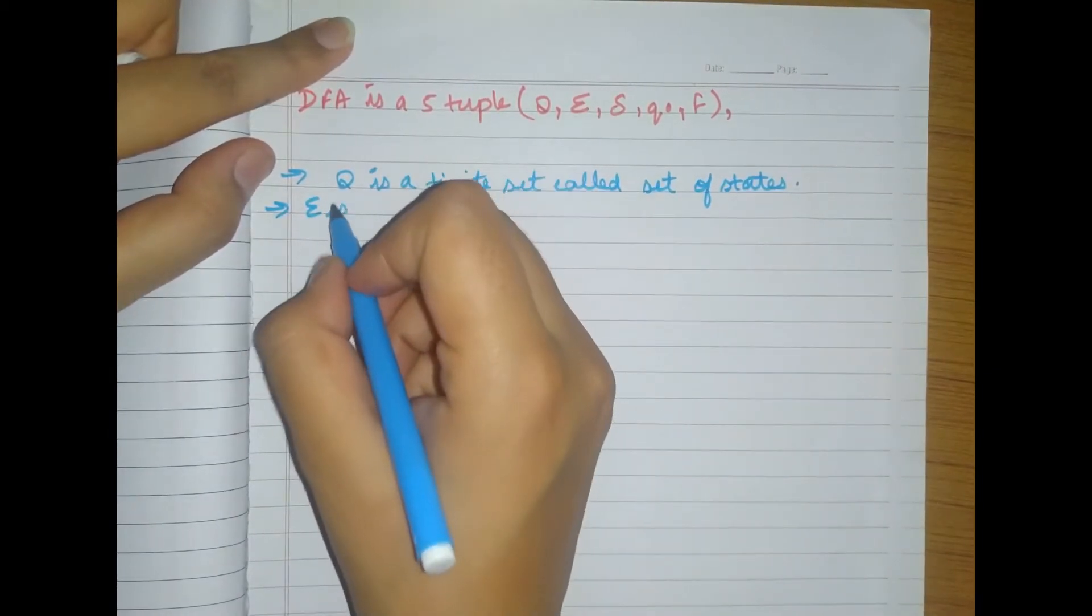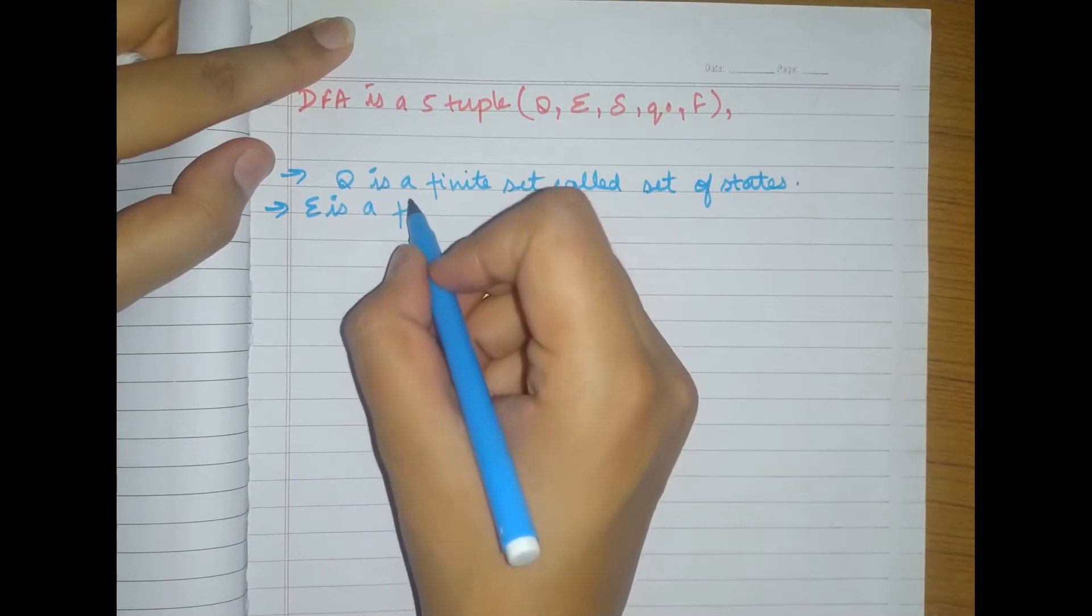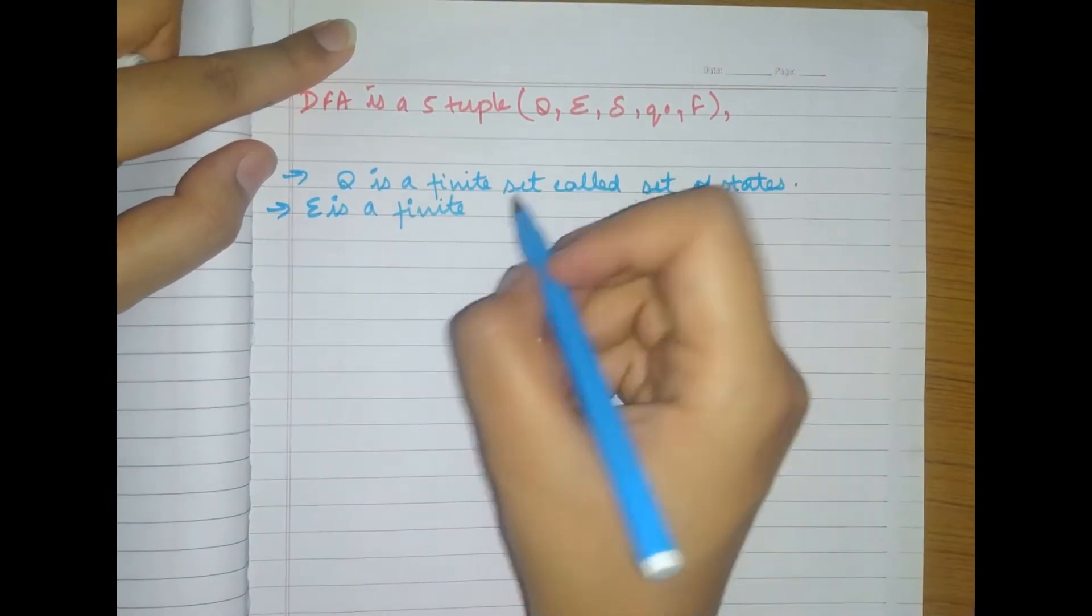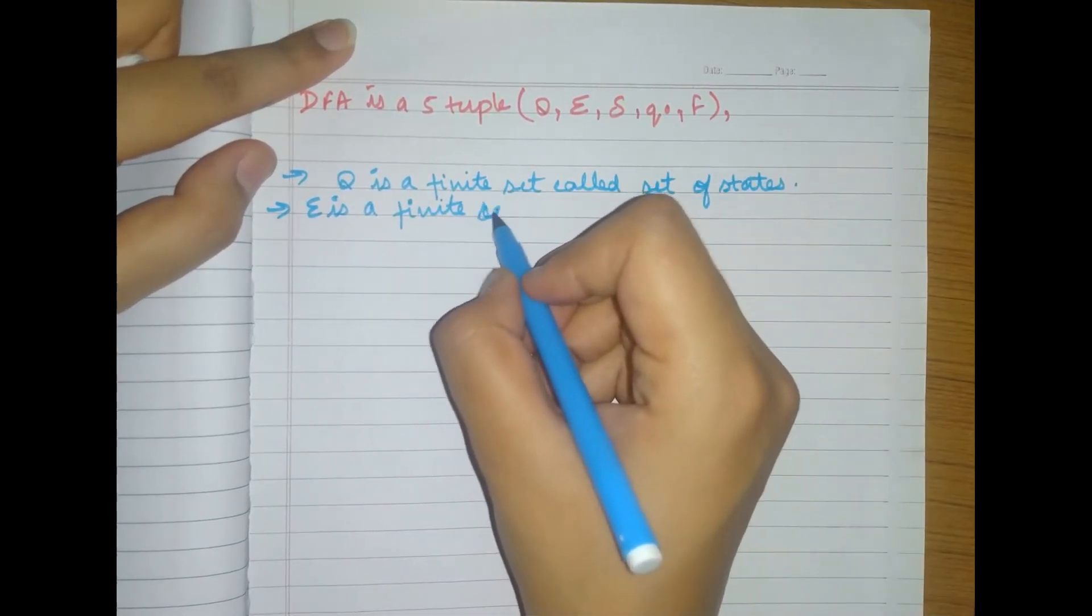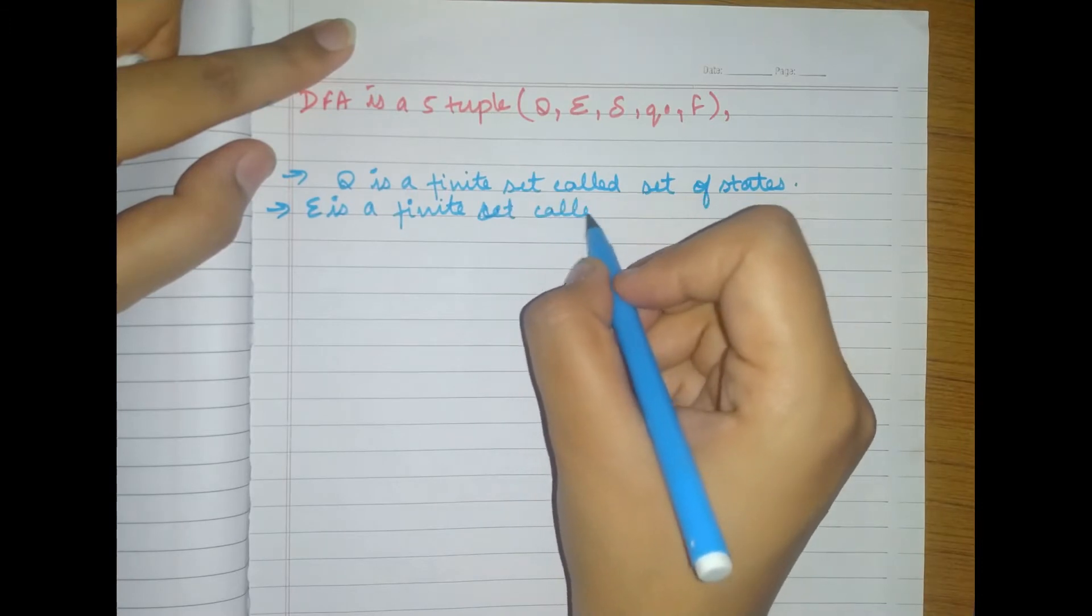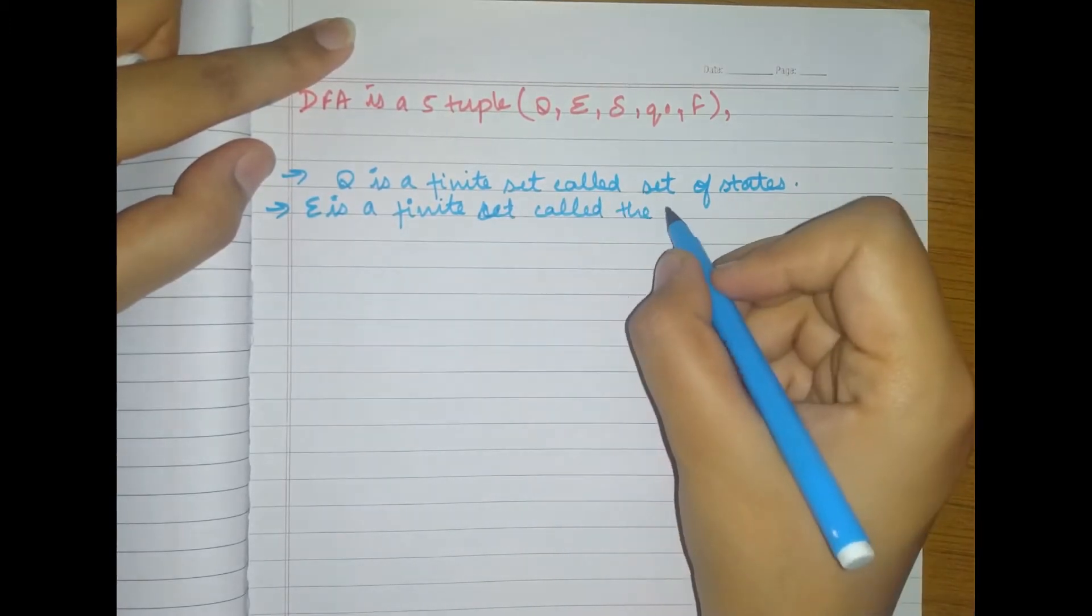And sigma, what is this sigma here? Sigma is a finite set called the alphabet.